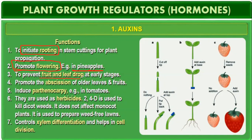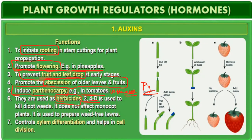Auxin acts to prevent fruit and leaf drop at early stages. It also promotes abscission of older leaves and fruits. It induces parthenocarpy — this is a very important point, with ten times previous year MCQs. In tomatoes, auxin induces parthenocarpy. It is used as herbicides and weedicides — for example, 2,4-D is used to kill dicot weeds. It does not affect monocot plants.